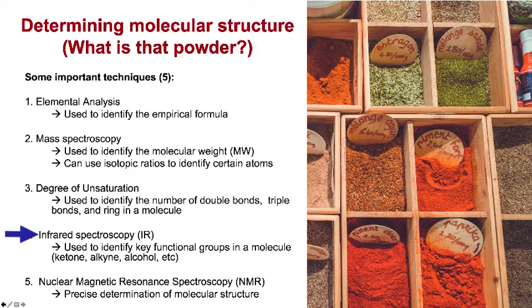Infrared spectroscopy can be used to identify key functional groups in a molecule, such as a ketone, alkyne, and alcohol. There are other reasons to use it, although these are the only ones we'll focus on in this course.